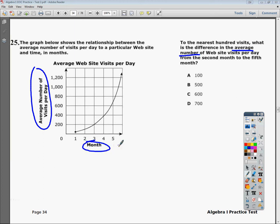They want to know, to the nearest hundred visits, what is the difference in the average number of visits per day from the second month to the fifth month. So I'm going to have to go up and figure out what this value is. And then on my 5, I'm going to have to go up and do this.